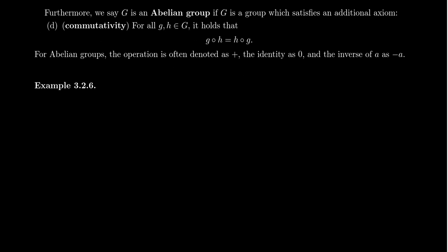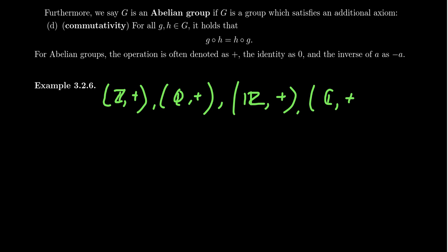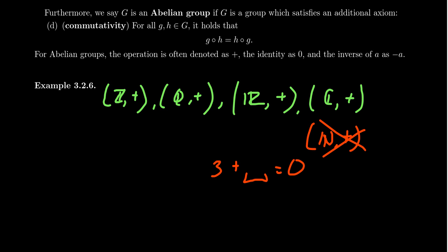Some examples of groups: the integers with respect to addition form a group, as do the rationals, reals, and complex numbers with respect to addition. However, the natural numbers with respect to addition do not form a group. Addition is associative in all these cases and zero is the identity, but the natural numbers lack additive inverses — there is no natural number to add to 3 to get 0, since negative three is not a natural number. Therefore the natural numbers under addition fail to be a group.